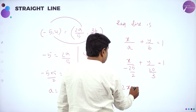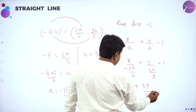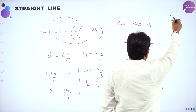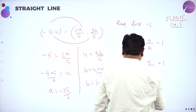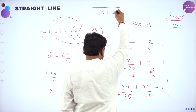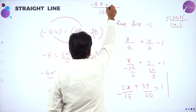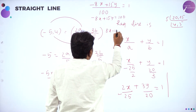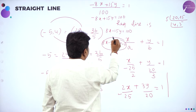This can be written as (2X divided by minus 25) plus (3Y divided by 20) equals 1. For 20 and 25, take the LCM and multiply both sides. Since 20 and 25 are both divisible by 5, the LCM is 100. Multiplying both sides by 100, we get minus 8X plus 15Y equals 100, or equivalently 8X minus 15Y plus 100 equals 0, which is the required equation of the line.